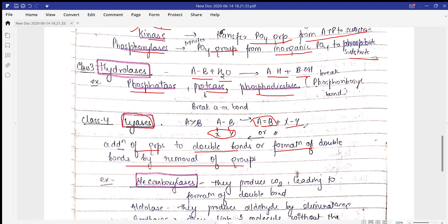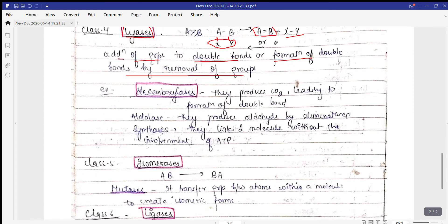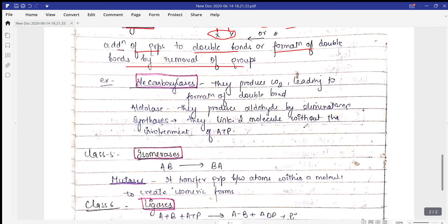Lyases involve addition or removal of groups. They can either form double bonds or single bonds by removal. Examples include decarboxylases, which produce CO2. Decarboxylases remove CO2, leading to formation of a double bond.